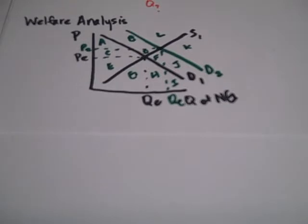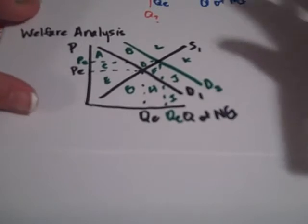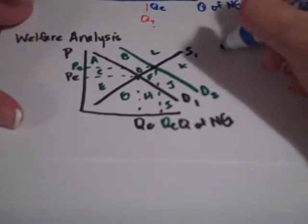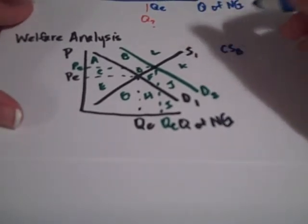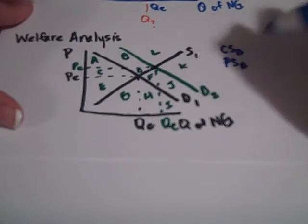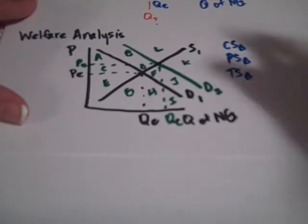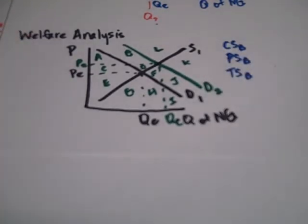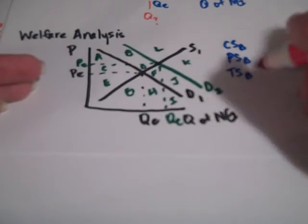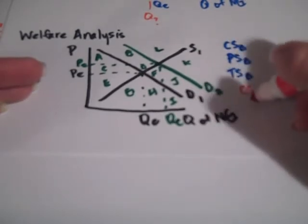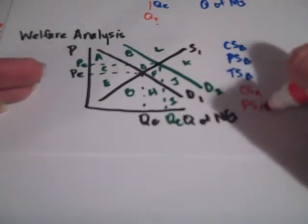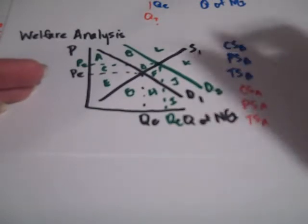All right, so if I'm looking at consumer surplus before, consumer surplus is the benefit to consumers for participating, or the extra joy that they get for participating in the market. So we have consumer surplus before, producer surplus before, total surplus before. Now, then, after that, we have consumer surplus after, producer surplus after, total surplus after.